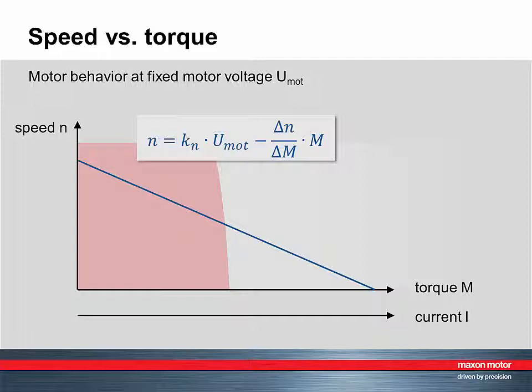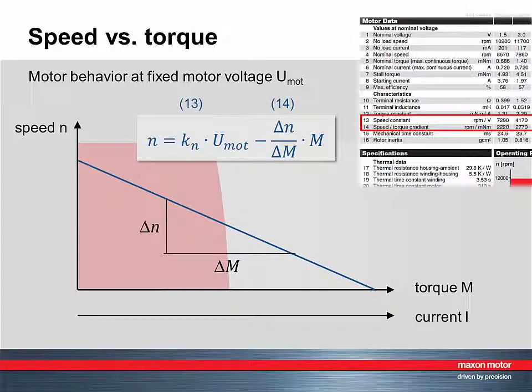As I said already, delta N over delta M is called speed torque gradient. It's the slope of the line and can be found in line 14 in the Maxon catalogue.